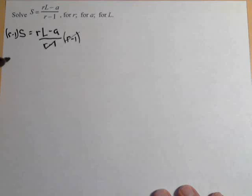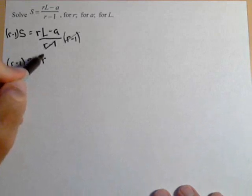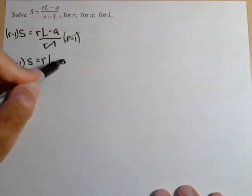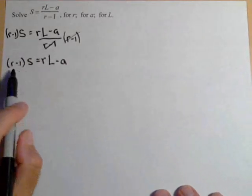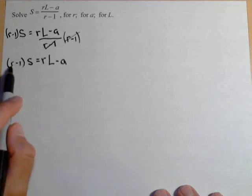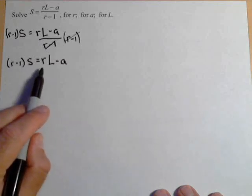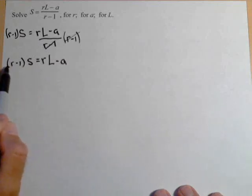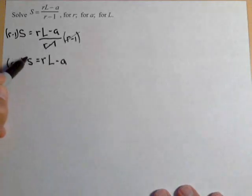Now, in looking what we have left, R minus one times S equals RL minus A. We have two R's in here and we have to solve for R. So we need to get both terms with R in it on the same side. Now, in order to move things around, we do need to get rid of these parentheses. So what we're gonna need to do next is distribute this S.